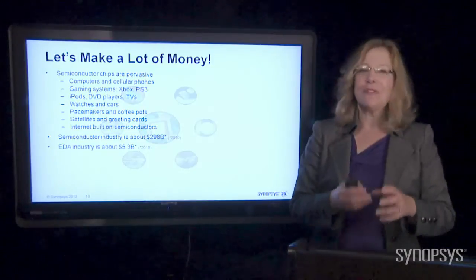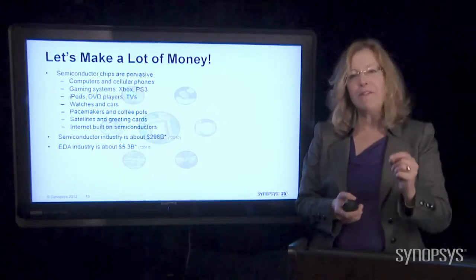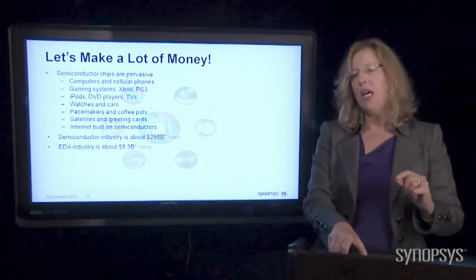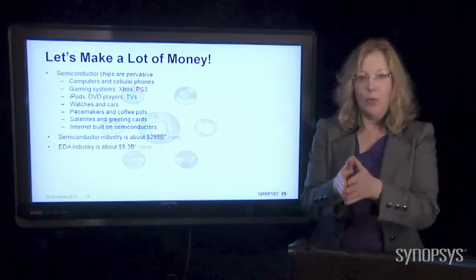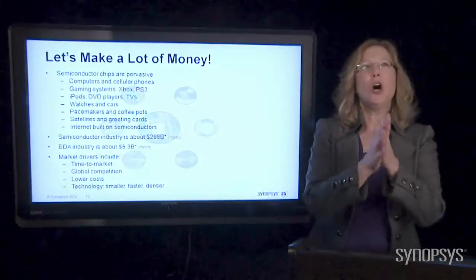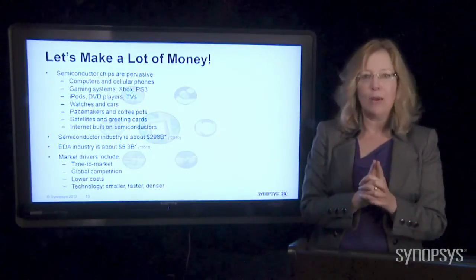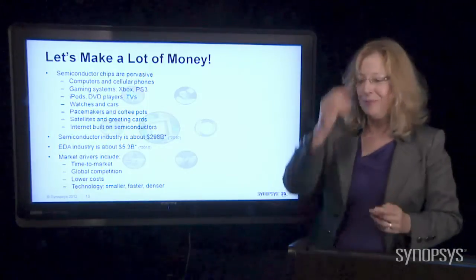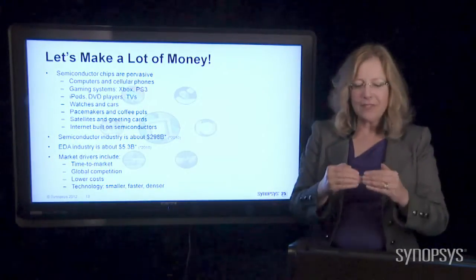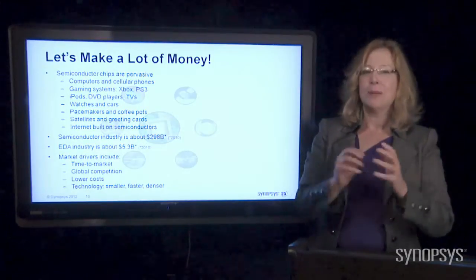The EDA industry, the kinds of things that my company does for a living, were about $5.3 billion. And it's really interesting because none of these computer chips would exist without the electronic design automation industry. So we have what we call market drivers. And these are the things that drive us to behave the way we are, which is kind of crazy. The first one is called time to market. You have to get your products out to the market in time. And that is fast. So let me tell you a story.